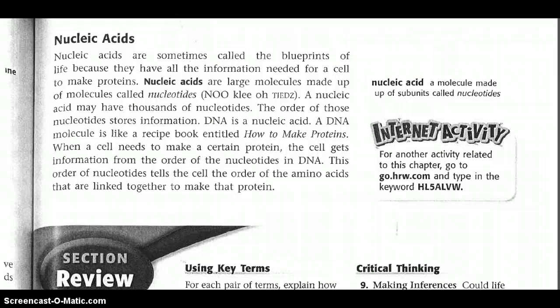Nucleic acids are sometimes called the blueprints of life because they have all the information needed for a cell to make proteins. Nucleic acids are large molecules made up of molecules called nucleotides. A nucleic acid may have thousands of nucleotides, and the order of those nucleotides stores information. DNA is a nucleic acid. A DNA molecule is like a recipe book entitled 'How to Make Proteins.' When a cell needs to make a certain protein, the cell gets information from the order of the nucleotides in DNA, which tells the cell the order of amino acids to be linked together to make a protein.